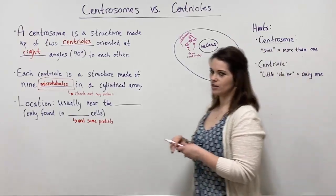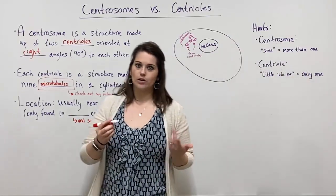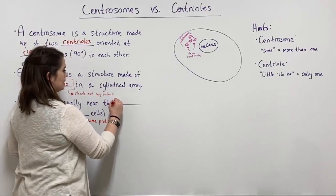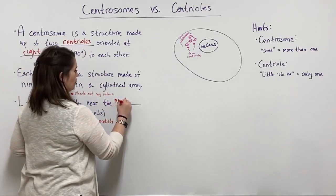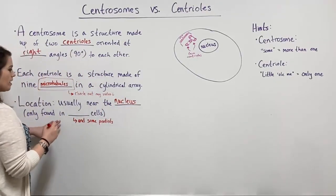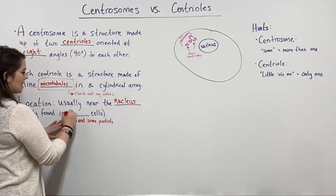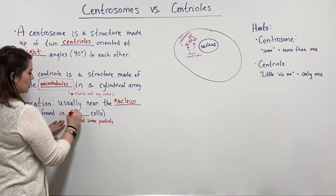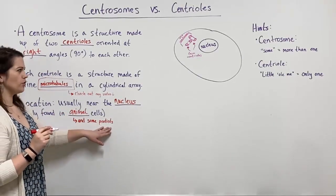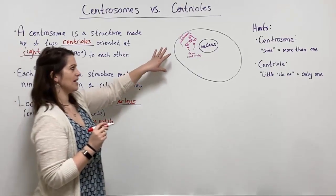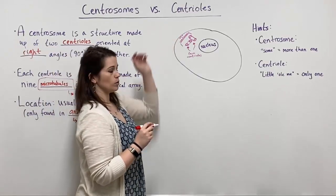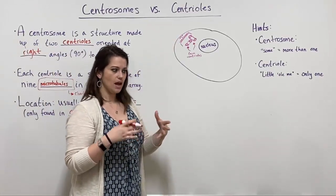Their location is usually near the nucleus in the cell. They are only found in animal cells and some protists, so you're not going to find a centrosome composed of two centrioles in plant cells.